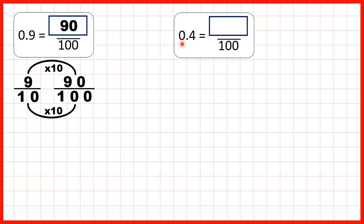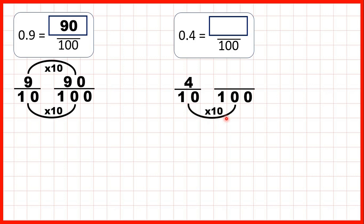Now we have 0.4. Again, the first digit after the decimal point tells us how many tenths we have, so that's 4 tenths. We need a denominator of 100. 10 times 10 is 100, so to get our numerator we need to multiply 4 by 10, and that gives us 40.